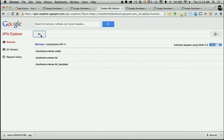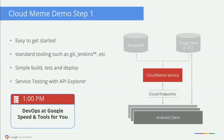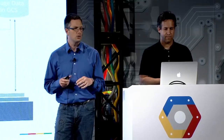So let's switch back to the slides. What we just showed you is that it's very easy to get started. We talked about using standard tools — we showed you the simple build, test, and deploy workflow, and how to test the service with API Explorer. Obviously we only touched on this briefly. If you want to drill in more, at 1 o'clock there'll be a DevOps at Google session in this room where we'll go into more detail. We're ready for step two.